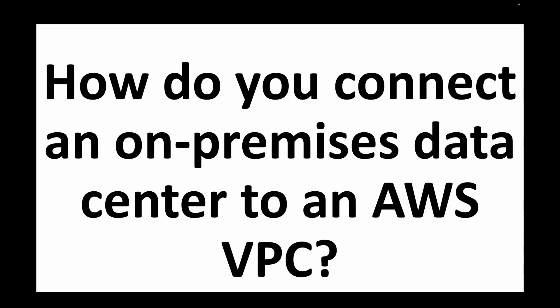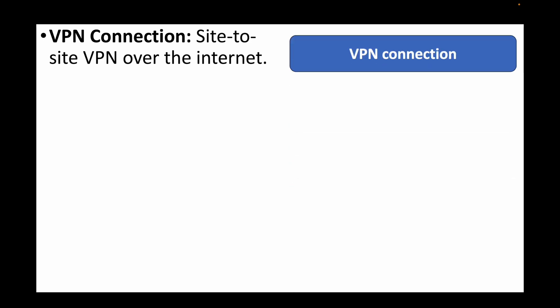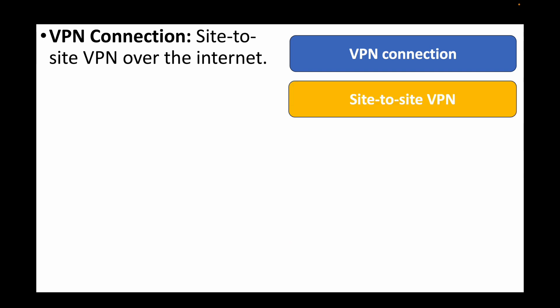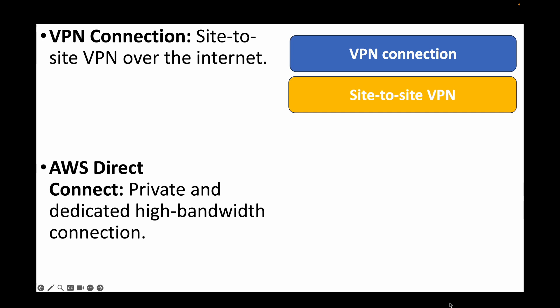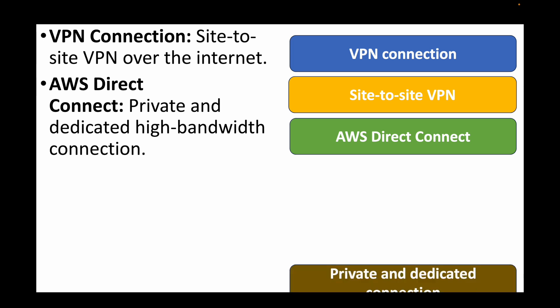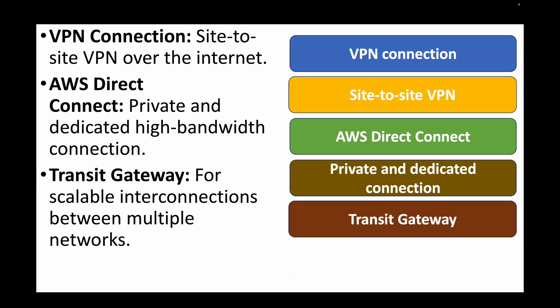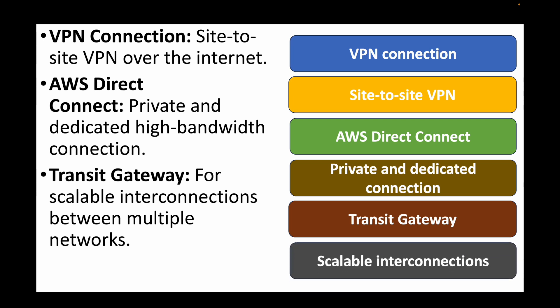The next question is: how do you connect an on-premises data center to an AWS VPC? You have multiple options. First, VPN connections — site-to-site VPN — for secure connections over the internet. Second, AWS Direct Connect, which provides a private dedicated high-bandwidth connection between AWS and on-premises. Third, Transit Gateway, mainly for large-scale interconnectivity when you have multiple VPCs and networks to work with.